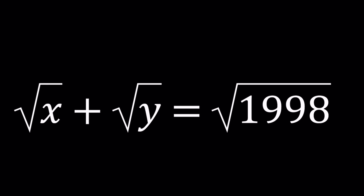Hello everyone. In this video we're going to be solving a radical equation. We have square root of x plus the square root of y equals the square root of 1998, and this problem probably appeared in a math competition in 1998.